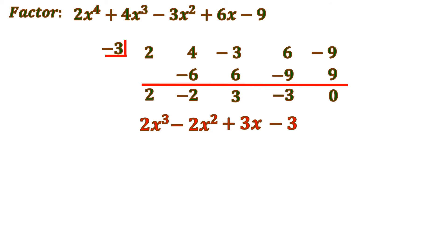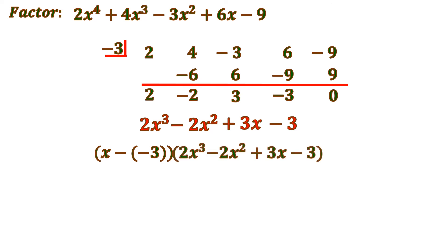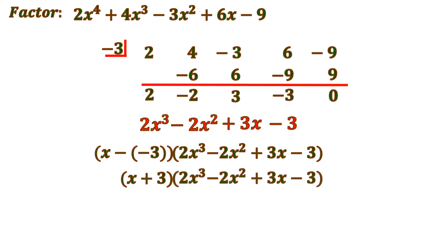Writing this in factored form: x minus negative 3, which simplifies to x plus 3, times the quotient 2x cubed minus 2x squared plus 3x minus 3. However, we are not done because 2x cubed minus 2x squared plus 3x minus 3 can be factored further. It is not easy to find — you could use synthetic division, but that requires a long trial-and-error procedure.